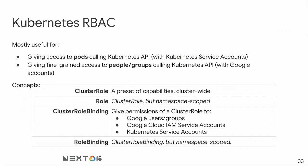Kubernetes RBAC lets you define which users, groups, or service accounts have access to which operations and API resources on which namespaces. The four key concepts are: cluster role (a set of permissions cluster-wide), role (the namespace-scoped version), cluster role binding (binding a cluster role to users), and role binding (the namespace-scoped version of that). Users can be Google users, Google groups, Cloud IAM service accounts, or Kubernetes service accounts.